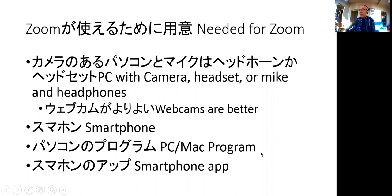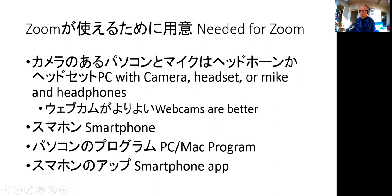The things needed for Zoom: first of all, you need a camera, a PC with a camera, headset or mic and headphones. Webcams are better than the ones fixed to your PC. Smartphones work too, and you also need the computer application and the smartphone application. It's best to get students to download those ready to go so they can start the lecture without issue.